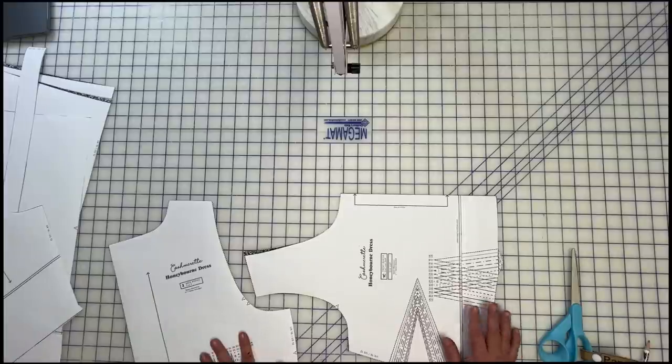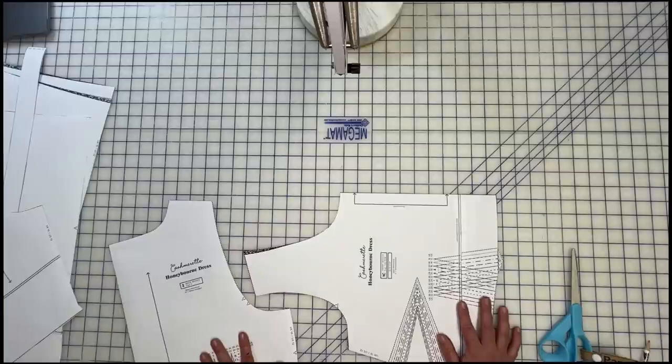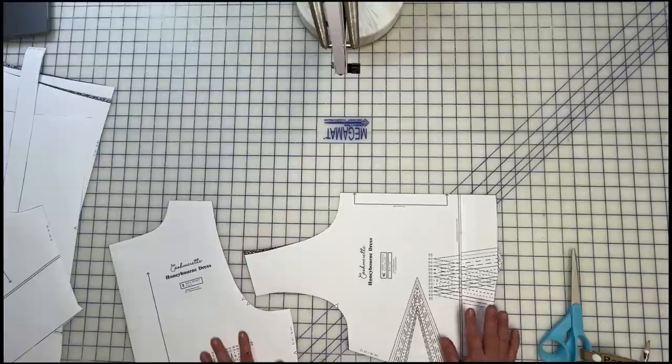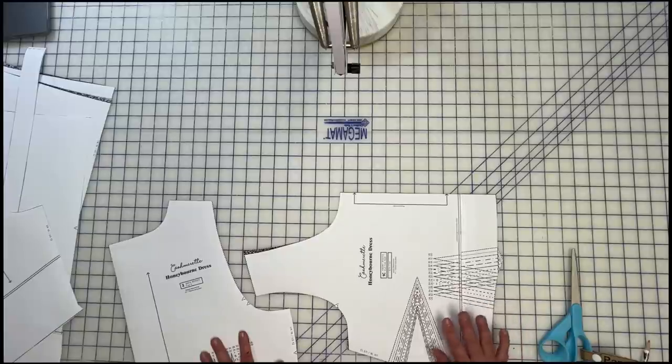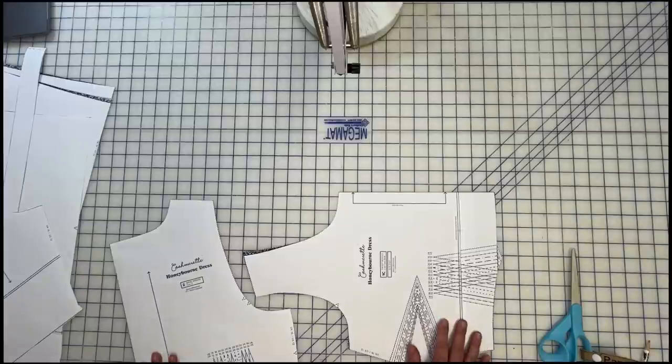So I'm going to actually line my dress. So the dress that you're seeing has been lined because I want to wear it in the cooler months. And so I just like that finish. So I'm going to be lining the bodice of my dress. But I'll show you how to do facings as well.